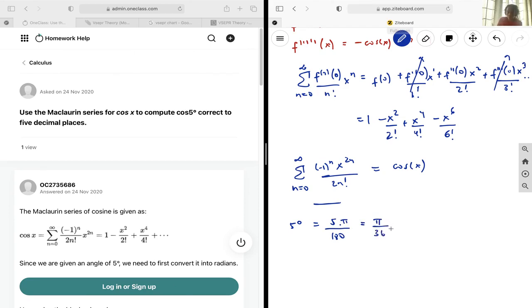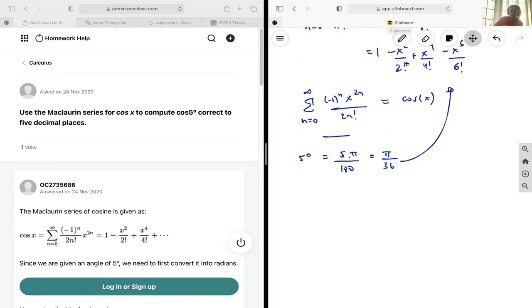And then we're simply going to plug that in to our series. And so cos of pi over 36 is going to be equal to the series that we have found, so pi over 36 in the place of x.